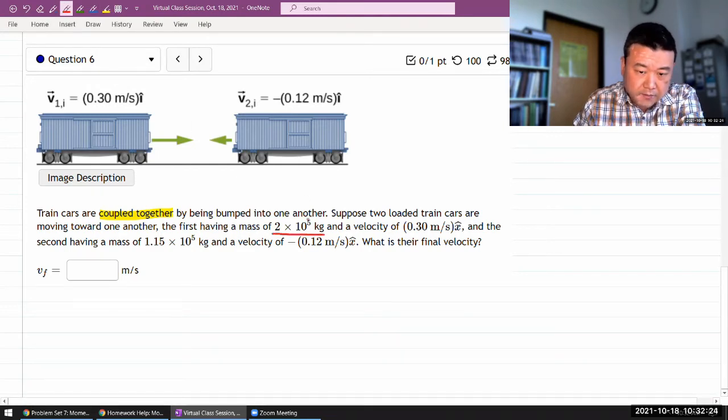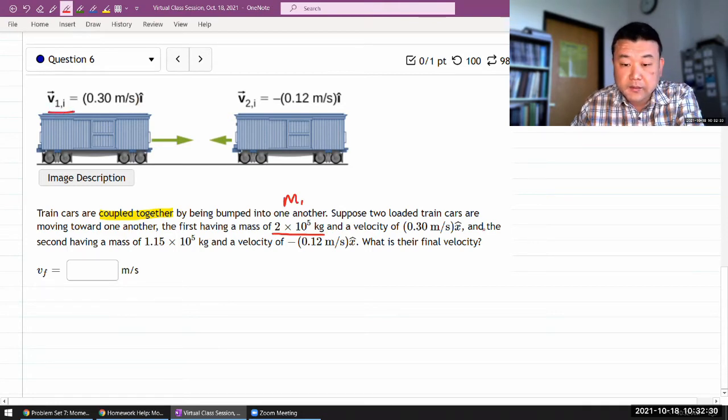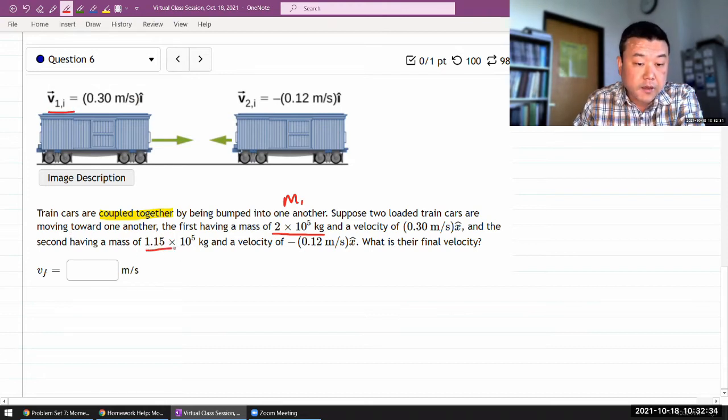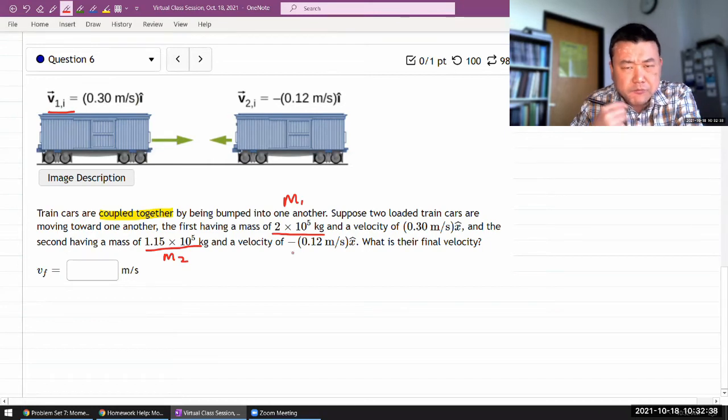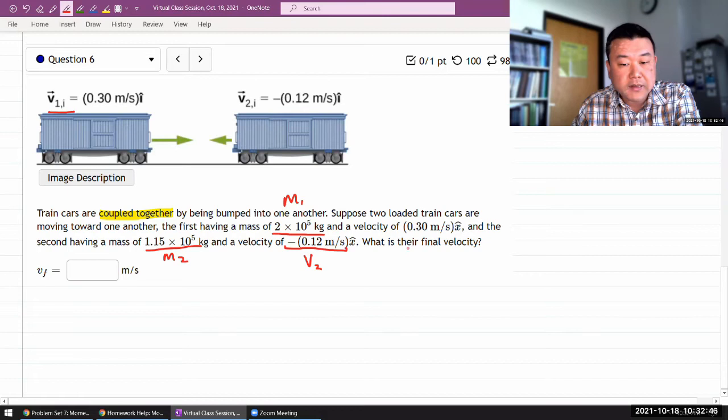So this is my mass M1 and a velocity of V1 and the second having a mass of M2 and a velocity of, let me break from my tradition here and use this quantity with negative sign as my V2. What is their final velocity, V final?